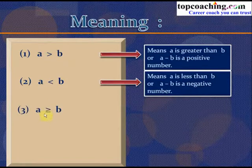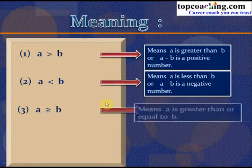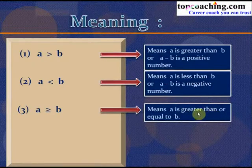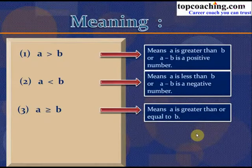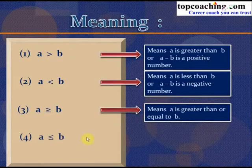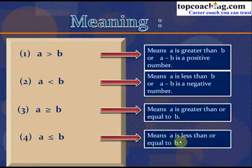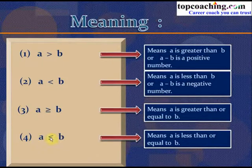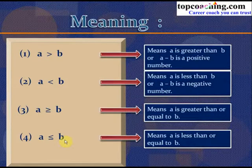A ≥ B denotes that A is greater than or equal to B — it could never be less than B. It could either be equal to B or greater than B, but never less than B. The symbol A ≤ B denotes that A is less than or equal to B. It can never be greater than B.